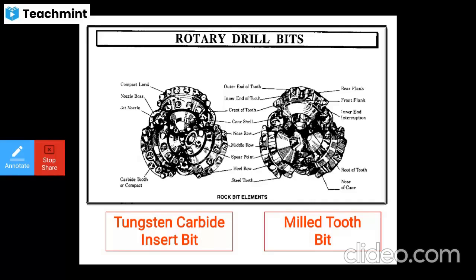Additional elements include the cone shell, crest of teeth, inner end of tooth, and outer end of tooth. This covers the rock bit elements for both the tungsten carbide insert bit and the milled tooth bit.